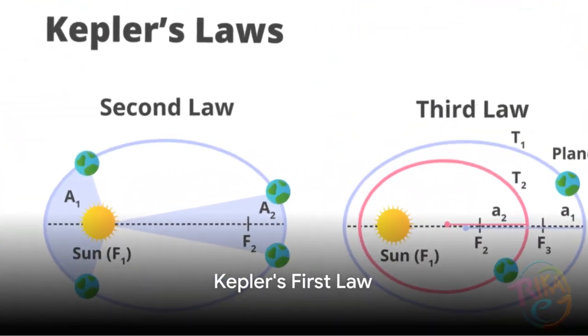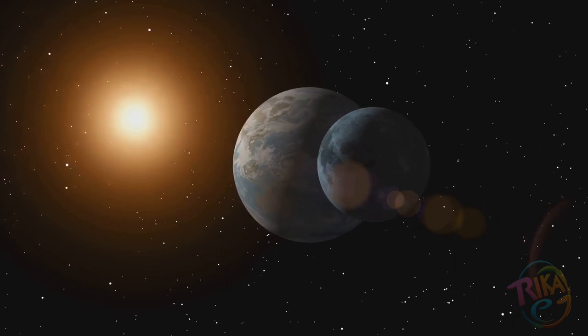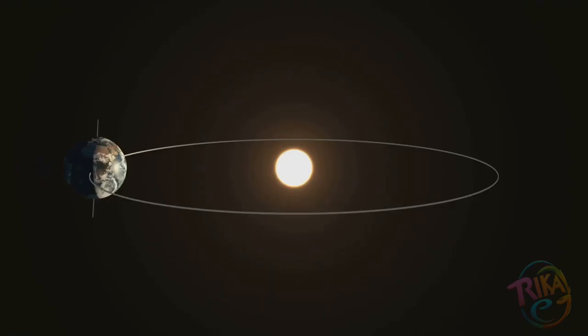This is the essence of Johannes Kepler's first law of planetary motion. Planets orbit the Sun in paths called ellipses, with the Sun at one focus. An ellipse is a shape that resembles a slightly squashed circle.